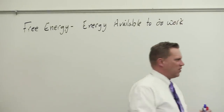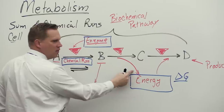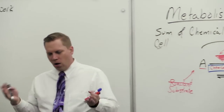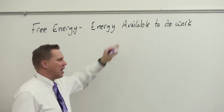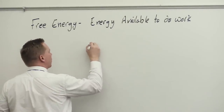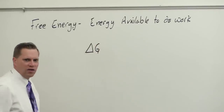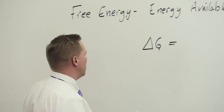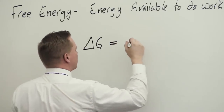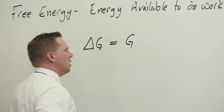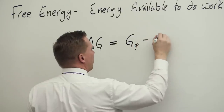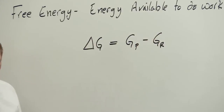Whenever we have a chemical reaction, we see some energy coming out and some energy going in. All reactions involve some kind of transformation of energy, and that's what we call free energy. Free energy is represented by the symbol delta G. The equation is: delta G equals the free energy of products minus the free energy of reactants.